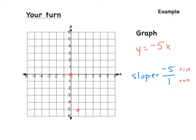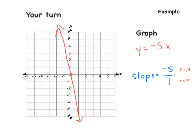Next, draw the lines. And this shows that it's a negative slope. So this is our graph for y equals negative 5x.